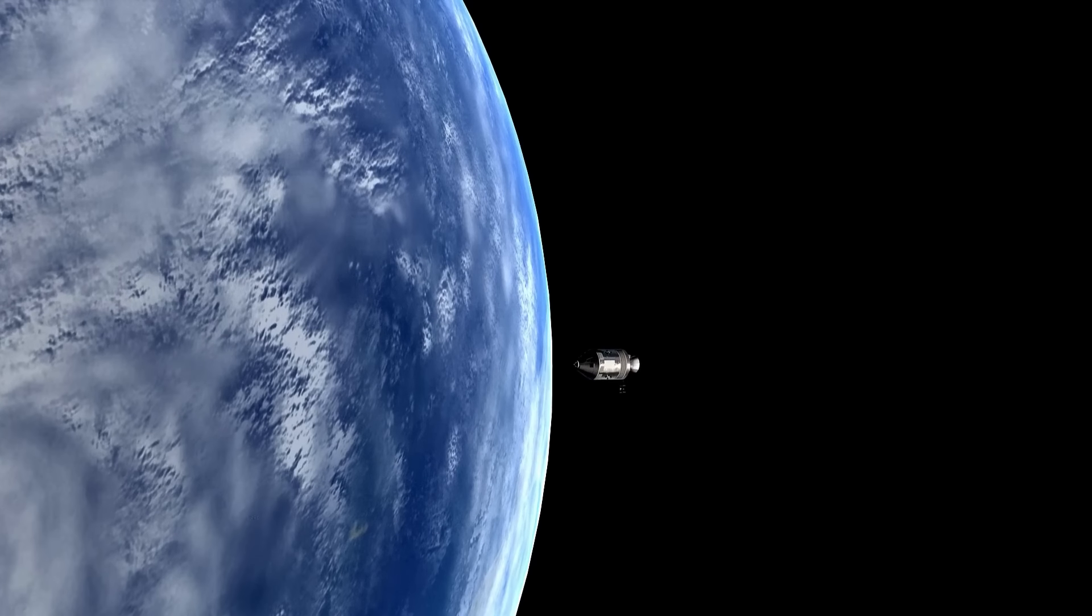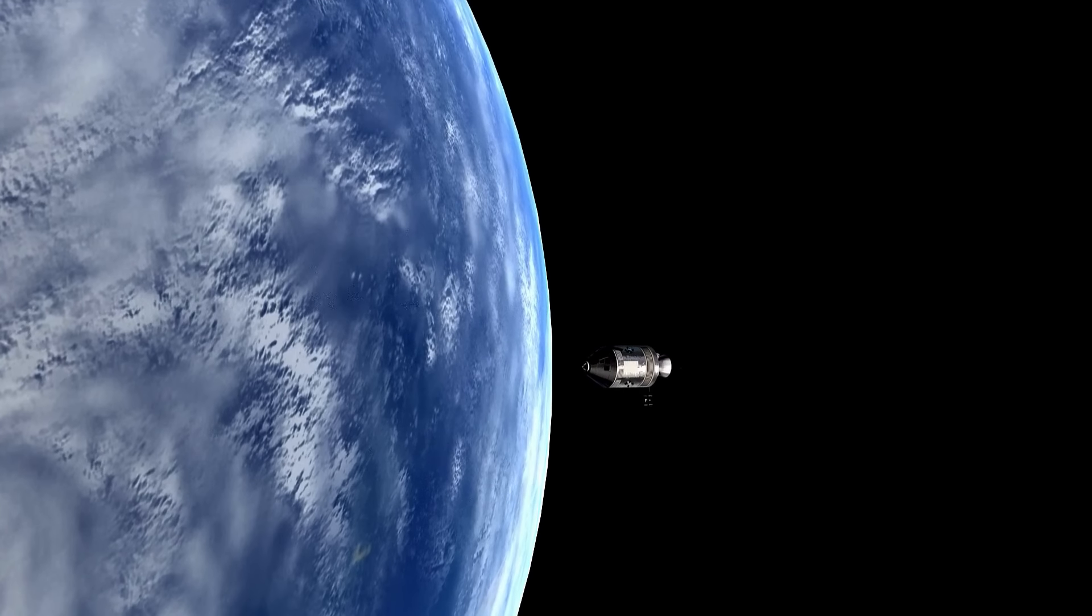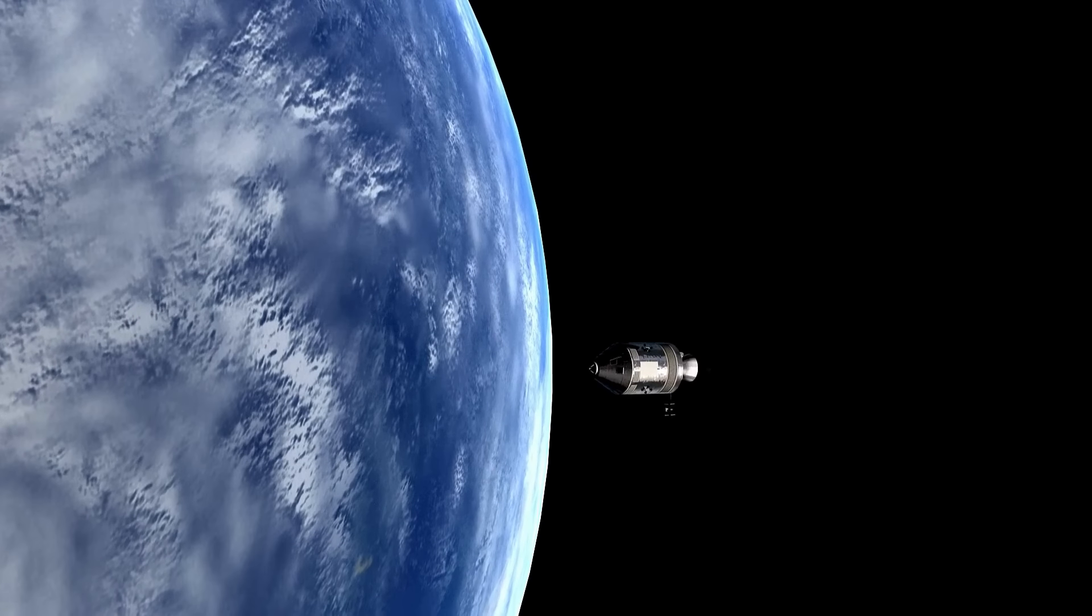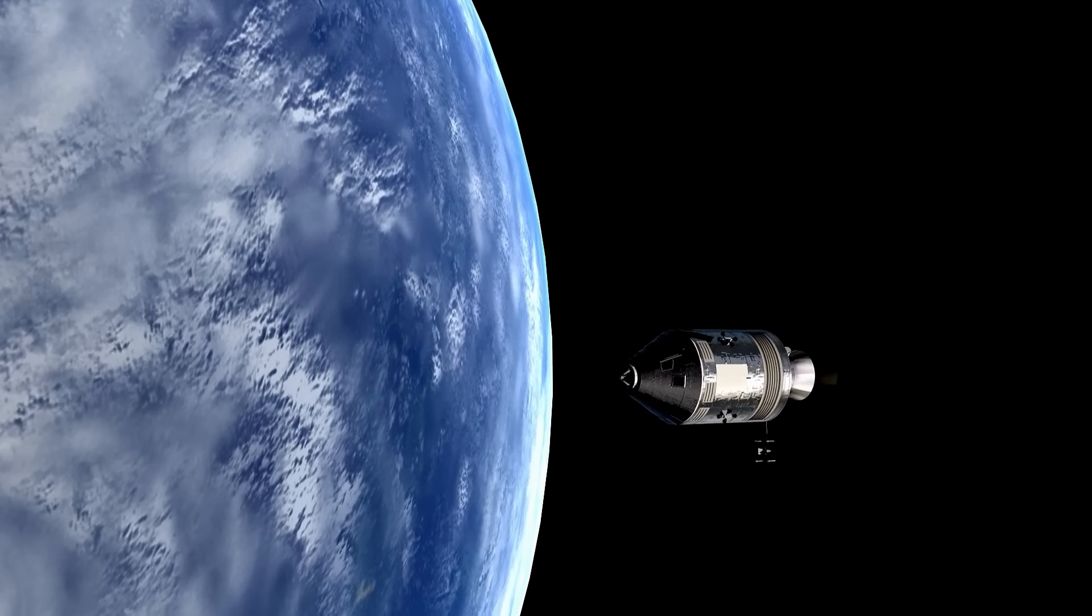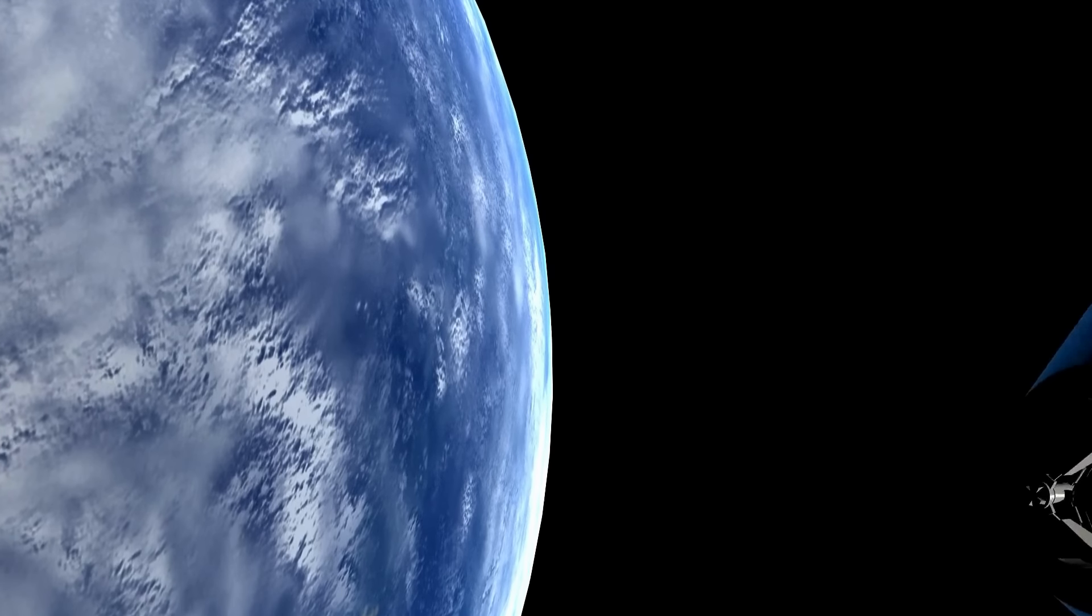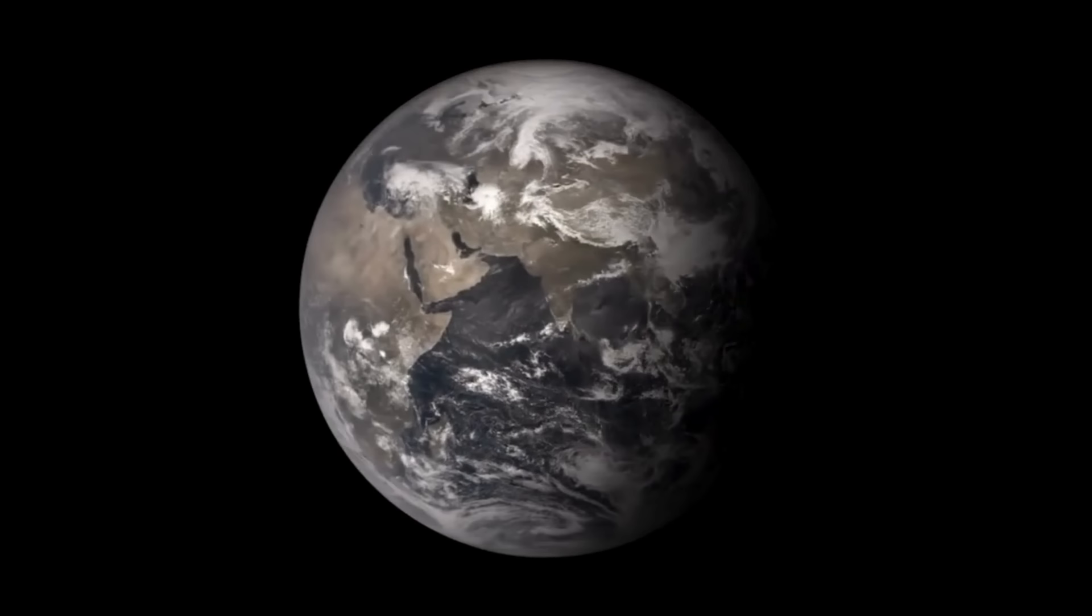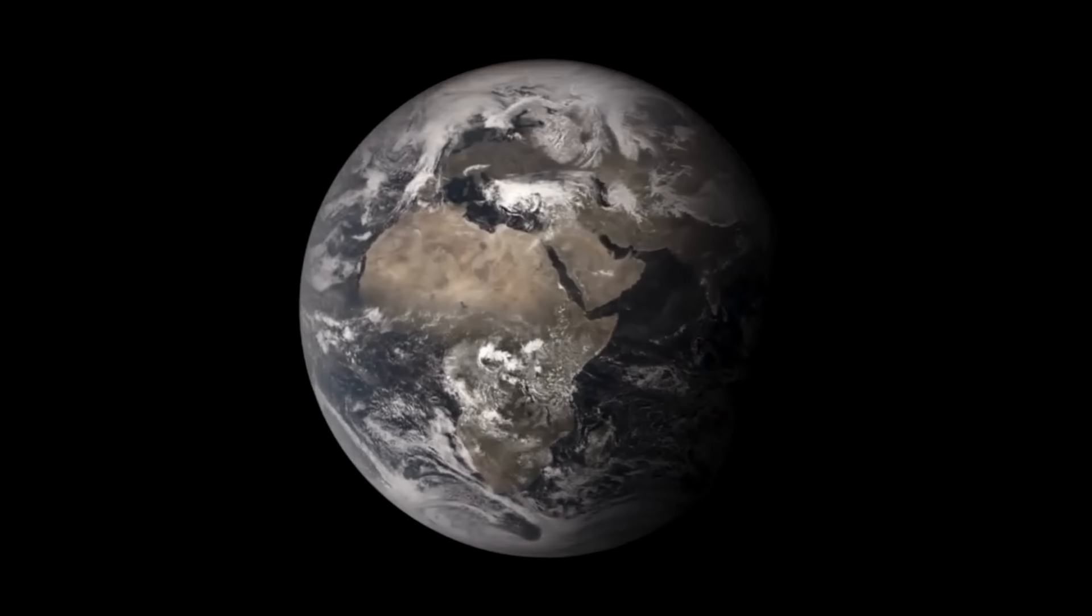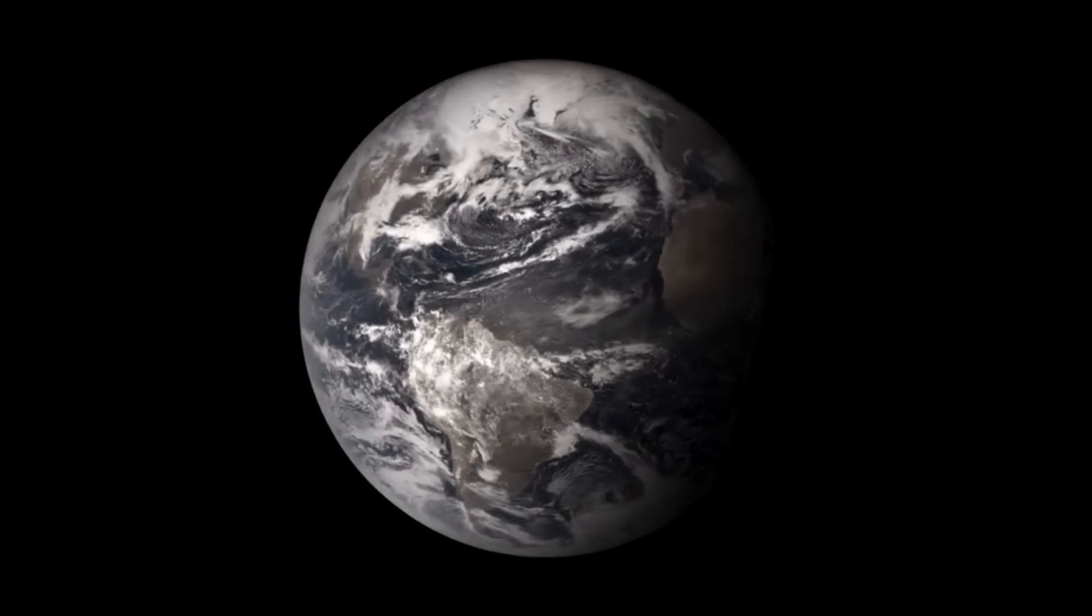Nous sommes en 1969. Les astronautes à bord du vaisseau spatial Apollo 10 passèrent à proximité de la partie ombragée de la Lune, s'éloignant plus de la Terre que n'importe qui avant eux.